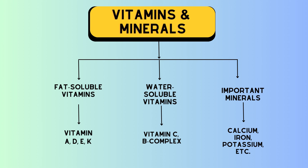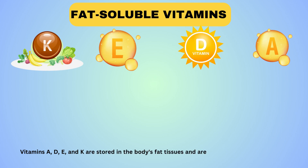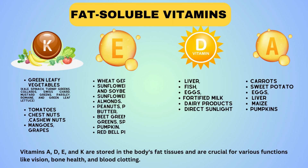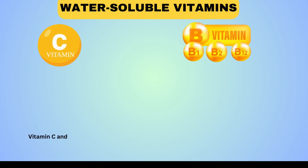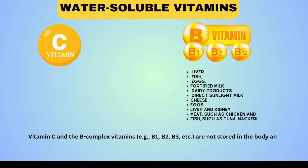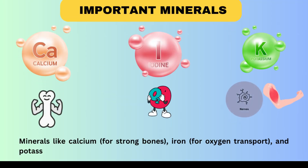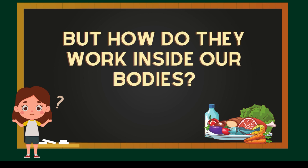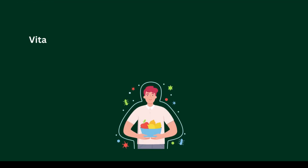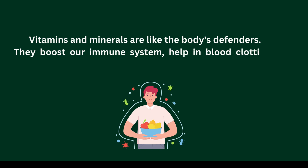They are essential for various bodily functions. Fat-soluble vitamins — K, E, D, and A — are stored in the body's fat tissues. Vitamins C and B complex vitamins are not stored in the body and need to be regularly replaced through the diet. Important minerals like calcium, iron, and potassium are vital for overall health. Vitamins and minerals are like the body's defenders — they boost our immune system, help in blood clotting, and maintain healthy bones.